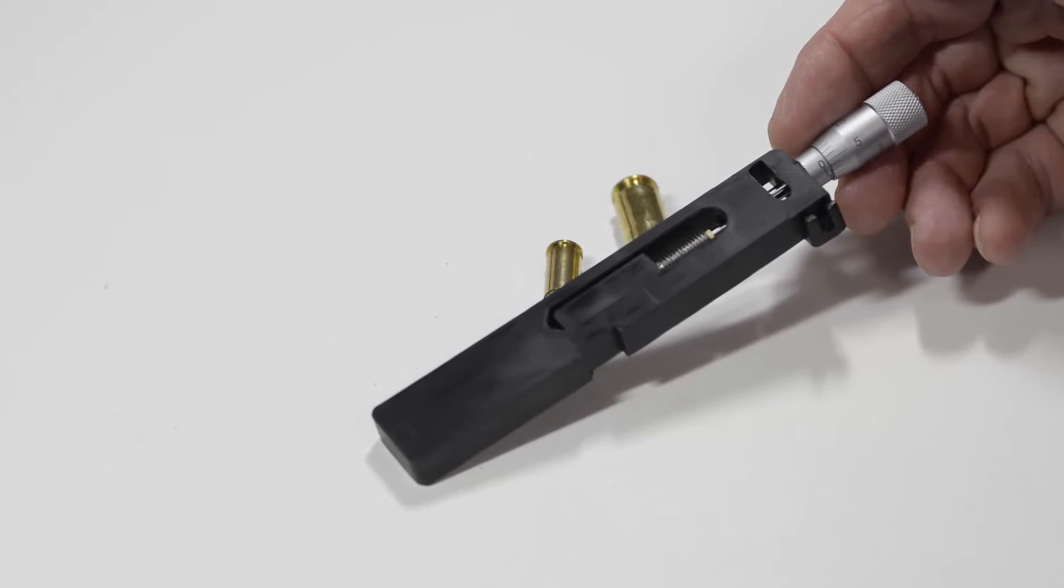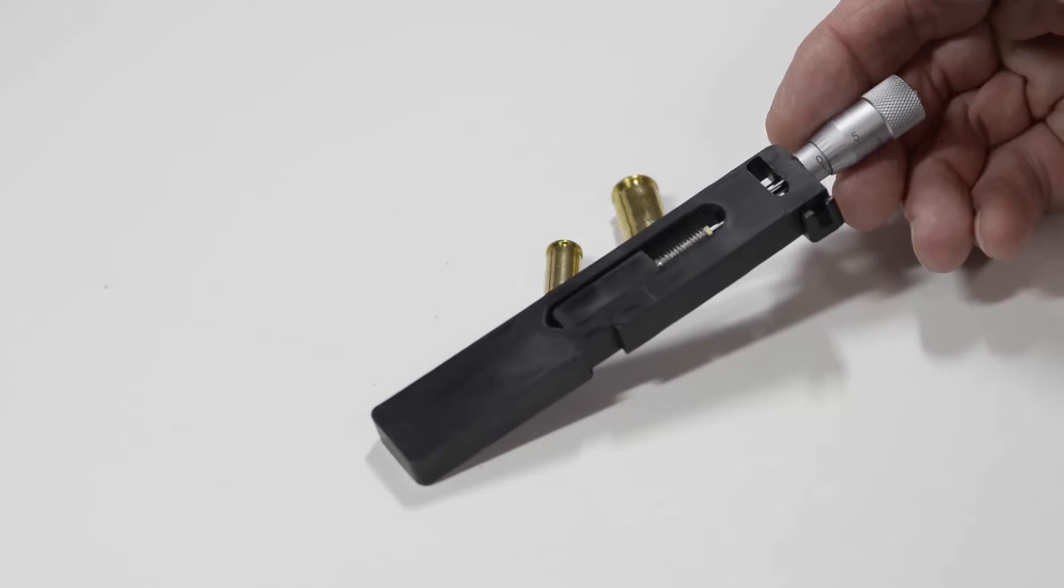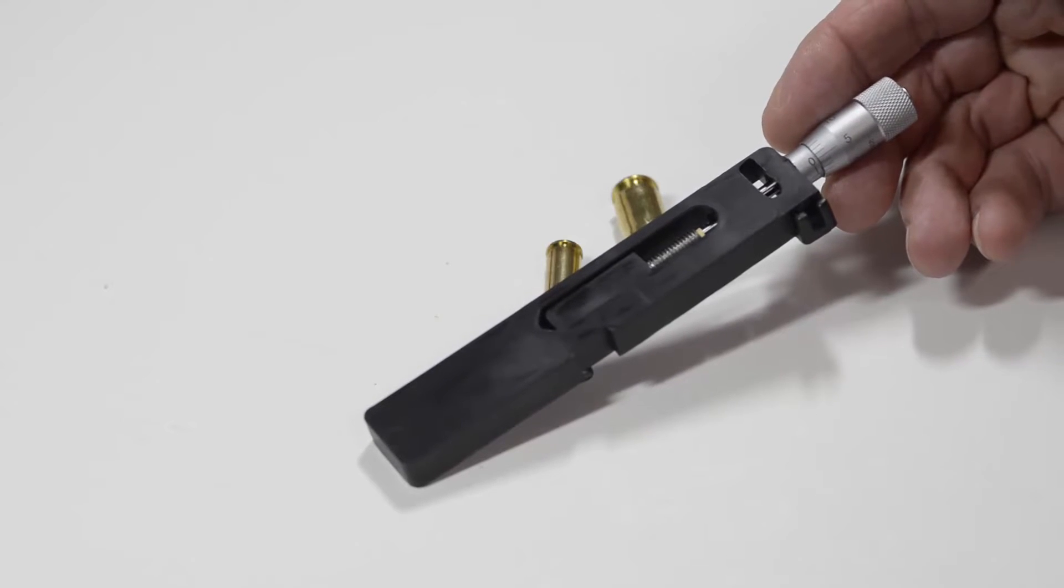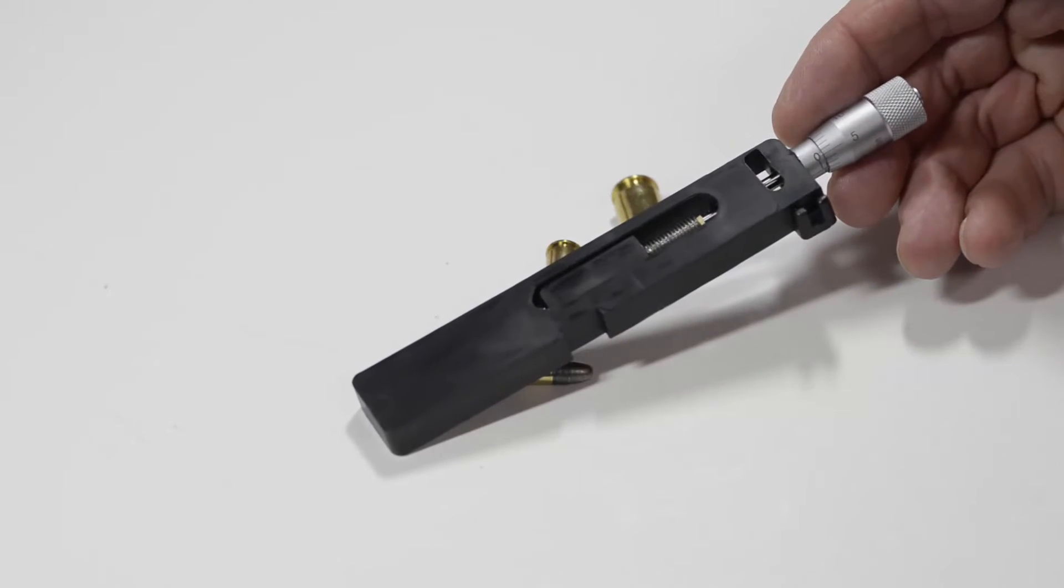Since I am setting up to reload 32 Auto, I purchased the Arredondo powder bar from Unique Tech in hopes of achieving more accurate and consistent charges. The Arredondo powder bar from Unique Tech comes with a Unique Tech micrometer already installed.